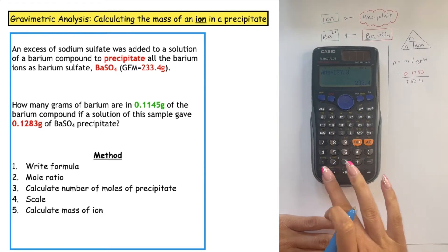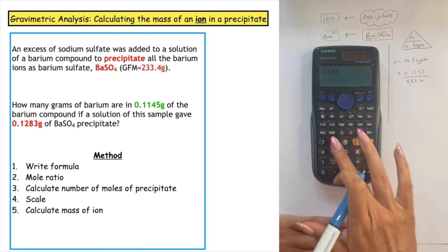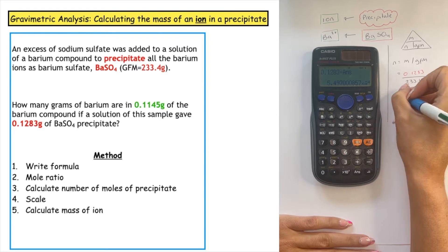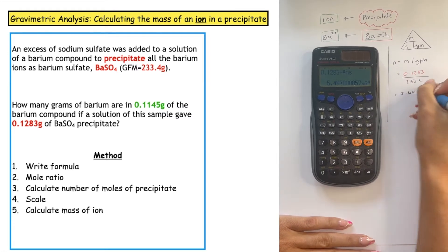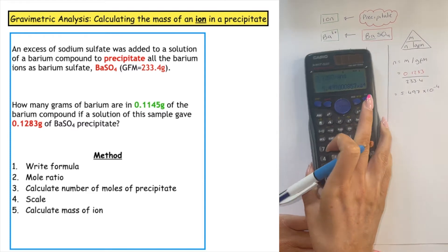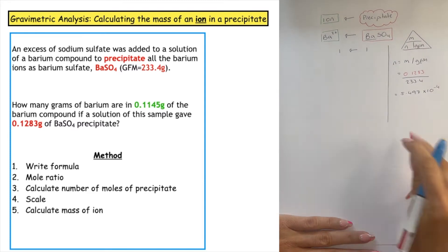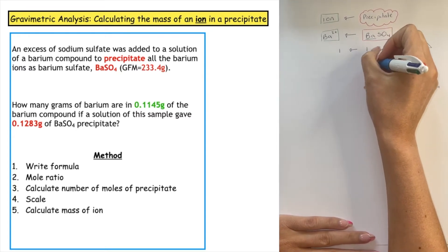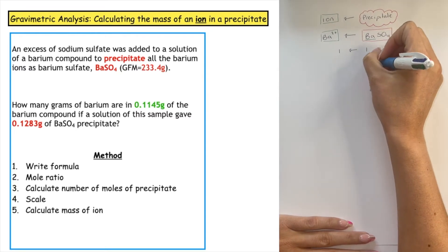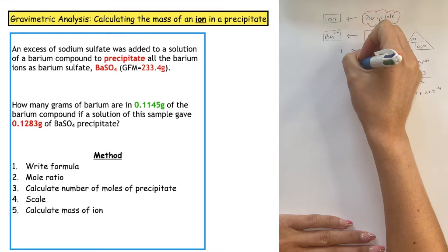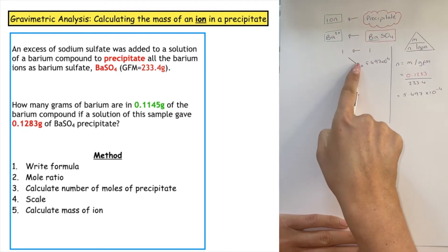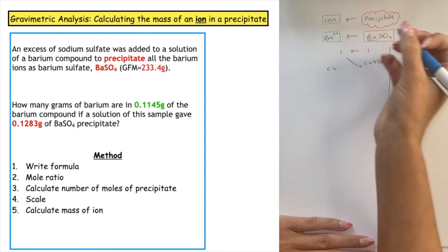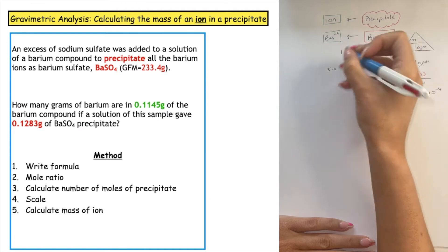Putting that into the calculator — 0.1283 divided by the GFM — gives a number of moles of 5.497 × 10⁻⁴. I pop this in to scale over: 5.497 × 10⁻⁴. Cross-multiplying, I times by 1 and divide by 1, so the same number of moles is produced for the barium ion.